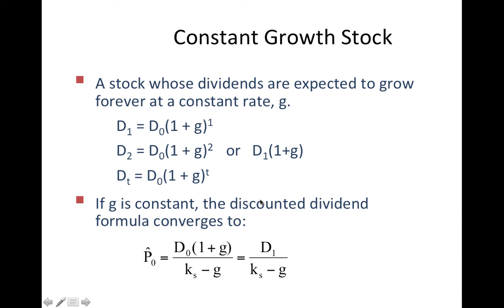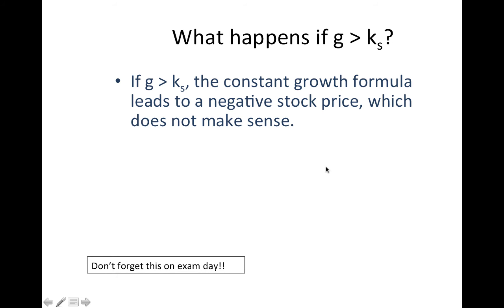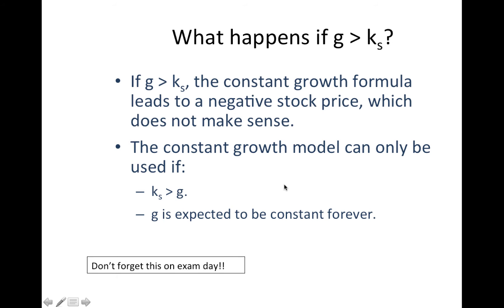Now, we can go back to the formula and kind of make it converge to something very simple, which is the price at time zero is going to be the dividend of the next period over K minus G. Sometimes we call this R, this required return. So what happens if G is bigger than K? Well, we are going to get a negative stock price, and this does not make any sense. Don't forget this on exam day. The constant growth model can only be used if K is bigger than G, and G is expected to be constant forever.